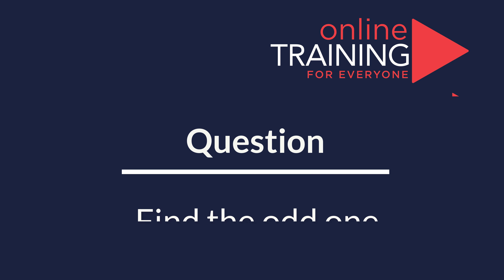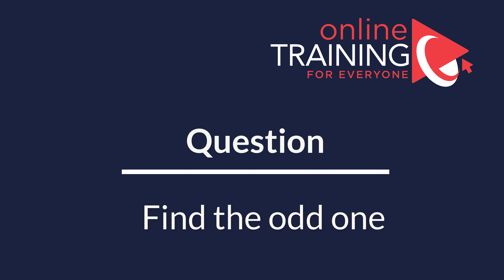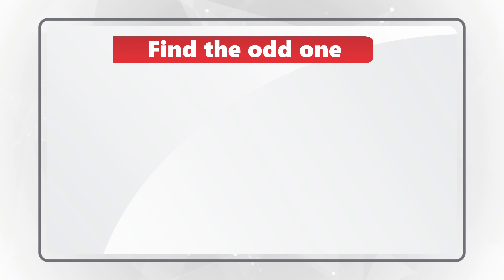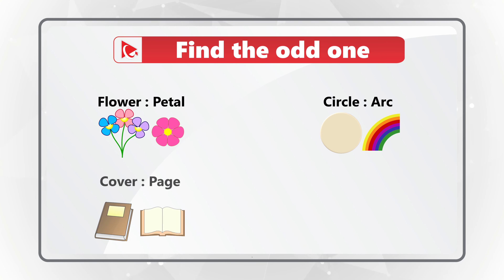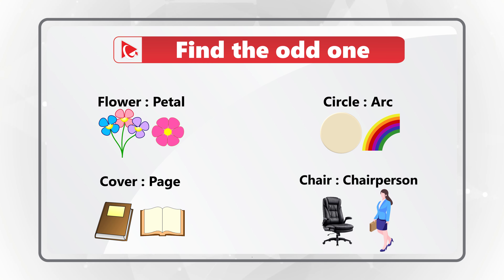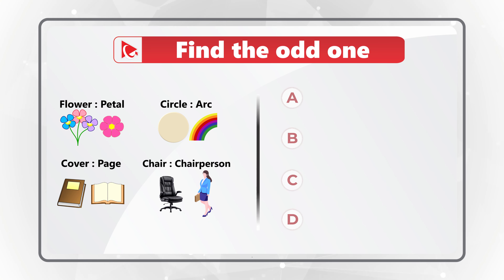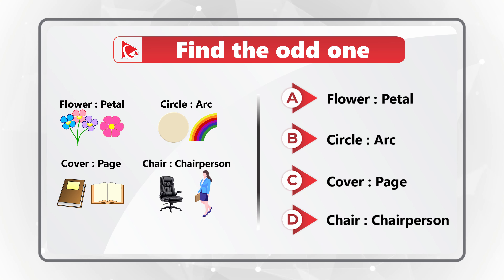Here's an amazing question where you are presented with four word pairs and you need to find the item that does not belong to the group. The first pair is flower and petal; the second is circle and arc; the third is cover and page; and the fourth is chair and chairperson. You need to select the word pair that does not belong.